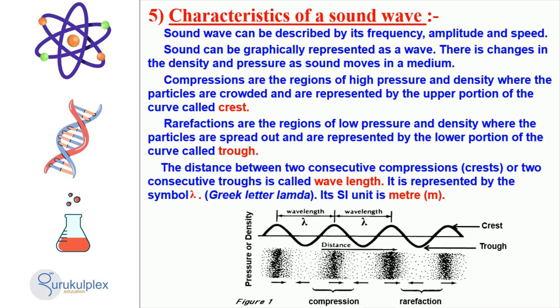The distance between two consecutive compressions or between two consecutive troughs is referred to as the wavelength and is symbolized by the Greek letter lambda. The International System of Units, SI unit for wavelength is meter, m.